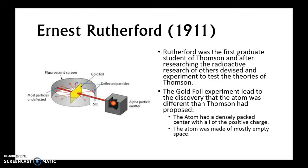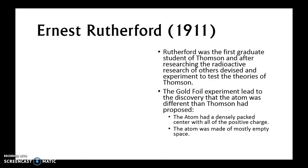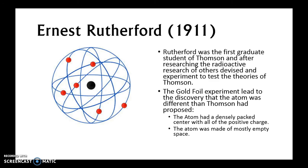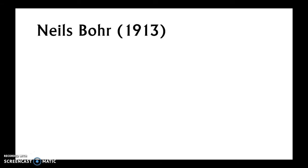Rutherford came up with the idea that atoms had a densely packed center with positive charge, and that the atom was made of mostly empty space. Between the electrons Thompson had discovered and this densely packed positive nucleus was mostly nothing. Rutherford's model shows all the electrons somewhere out at the edge of the sphere, while the nucleus sits in the very center with nothing in between.